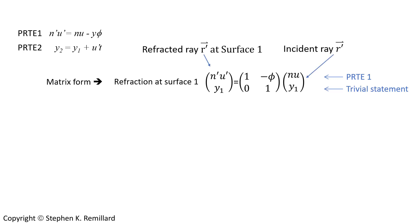The matrix equation will have a two by two matrix and a two by one vector, where the vector is the ray vector describing the direction that the ray goes and the refractive index times the angle. You could call it the optical angle analogous to optical path length, and y is the height of the ray where the refraction occurs.